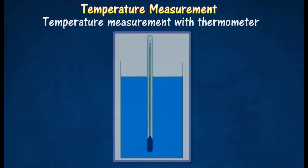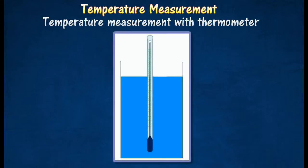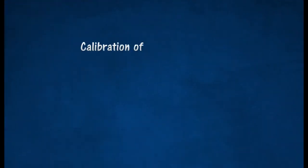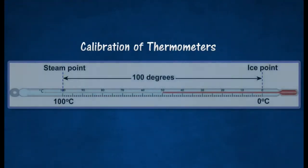When a mercury in glass thermometer is used to measure the temperature, the mercury in the thermometer bulb will eventually be in thermal equilibrium with the object. Thermometer can accurately determine and measure the temperature.